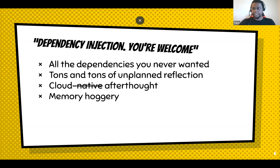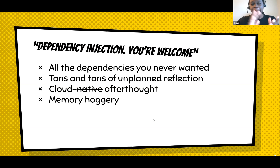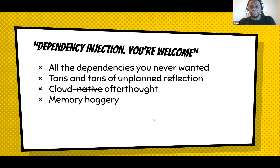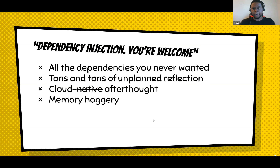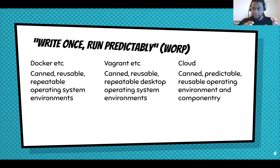All of this — the dependencies you didn't want, the reflection overhead, the cloud-native afterthought — comes at a price: tons and tons of memory. A lot of dependency injection frameworks are hungry hungry hippos for RAM.